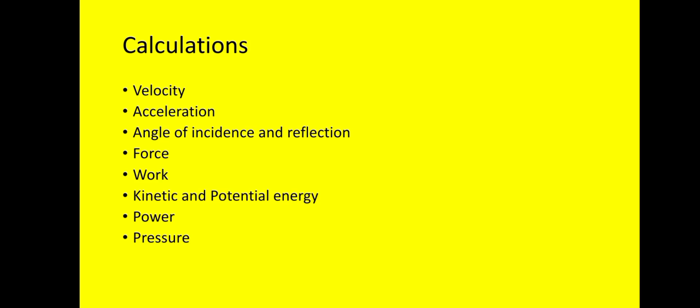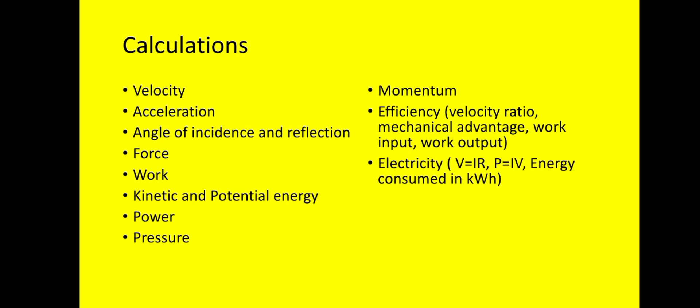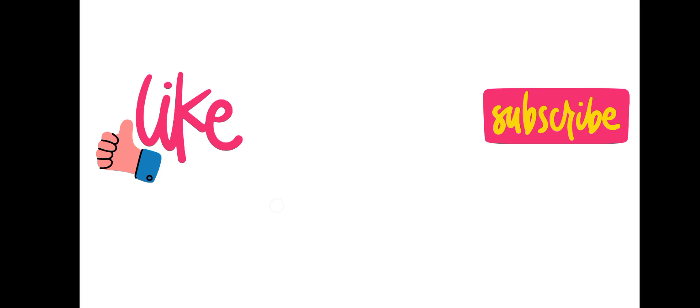Then you have momentum - momentum is a new introduction. Momentum: the formula is mass times velocity. Then we have efficiency which has to do with machines, velocity ratio, mechanical advantage, input and work output. Then we have electricity which you shouldn't joke with. We have Ohm's law, then we have calculation of energy consumed in kilowatt hour - also in electricity where current multiplied by potential difference will give you power. Click on the image by my channel name to find more videos that I make.